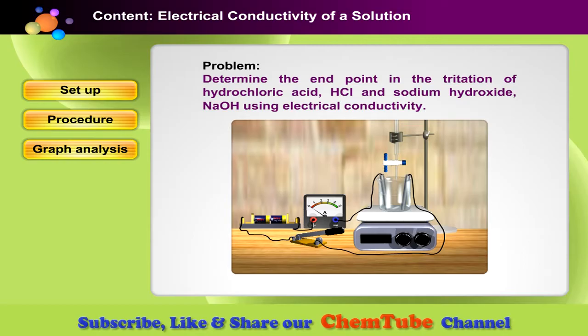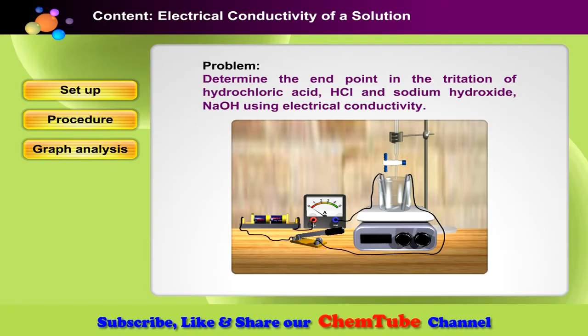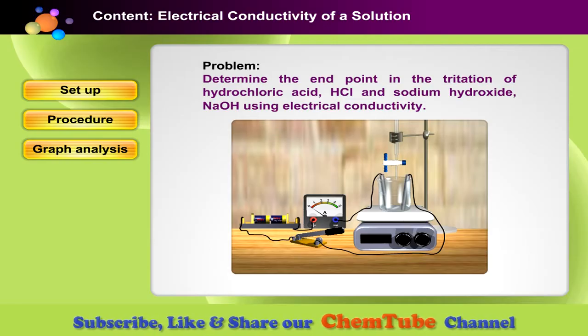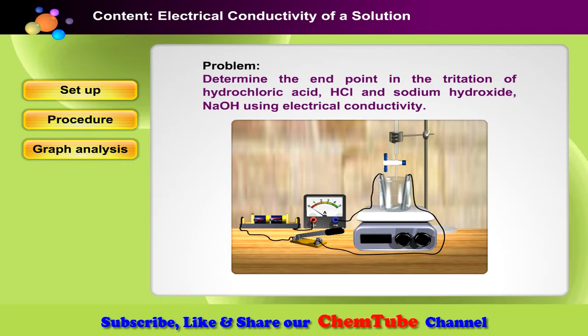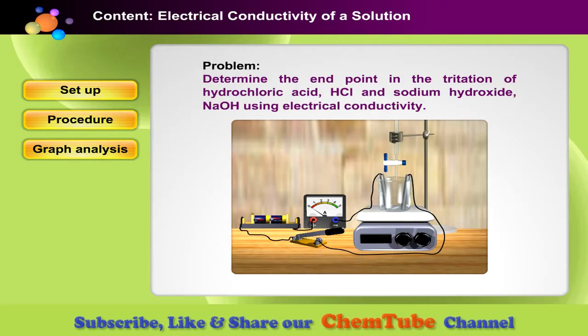There's another method to determine the endpoint of a neutralization reaction. We know that acid and alkali are electrolytes. That means they dissociate into ions that conduct electricity, and the electrical conductivity can be measured during titration. Therefore, the endpoint can be determined. Click on the button to know how it is done.